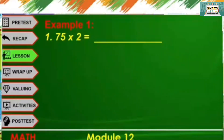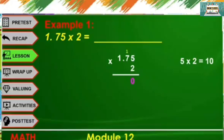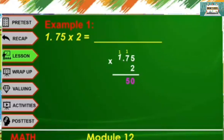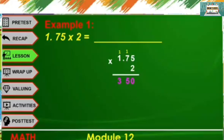Let's have some examples. 1 and 75 hundredths times 2. So, 5 times 2 is 10; bring down 0, carry 1. 7 times 2 is 14 plus 1, that's 15; bring down 5, carry 1. Then 1 times 2 plus 1 is 3. Count the number of decimal places — 2. Therefore, the answer is 3 and 50 hundredths.